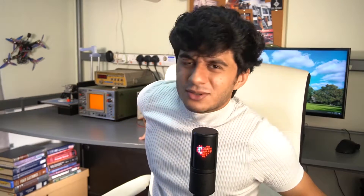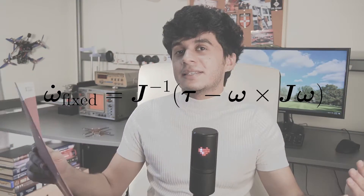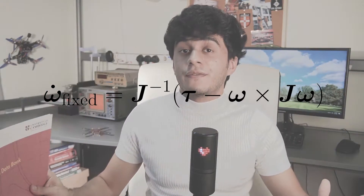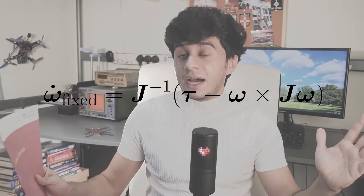The answer to that conversion can be found in any mechanics reference book. Applying the standard equation to our Newton's second law, we arrive at the final equation: the angular acceleration in the fixed reference frame equals the inverse of the inertia matrix times (tau minus omega cross J*omega). This is our final equation describing how our quadcopter accelerates due to given torques. Integrating once gives our angular velocities in the fixed reference frame, and integrating again gives our angular positions.